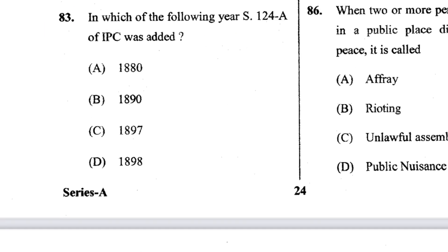Question 83: In which year was Section 124A of IPC added? That was in 1898. D is the answer.